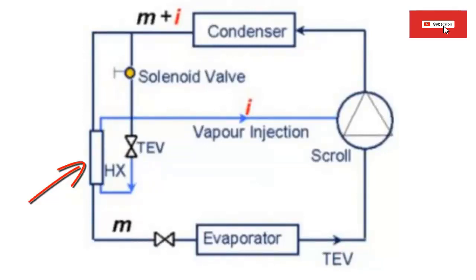7. The evaporated refrigerant I, through the heat exchanger HX, is injected into the compressors, providing additional cooling at higher compression ratios.